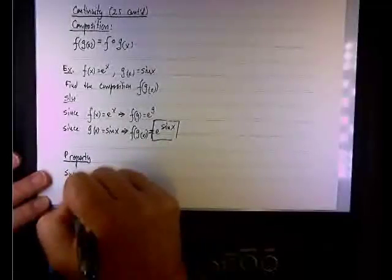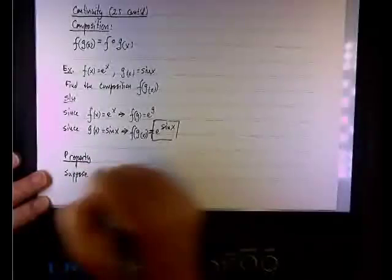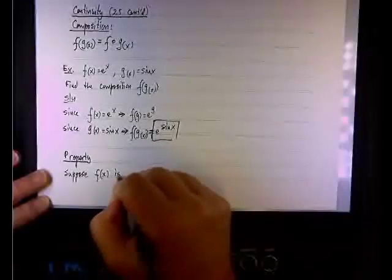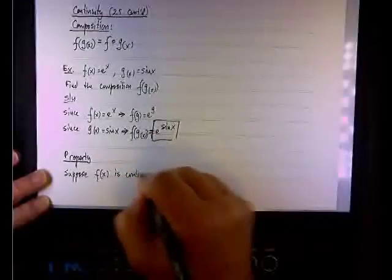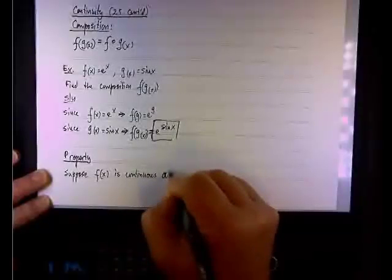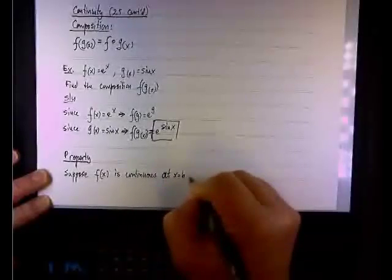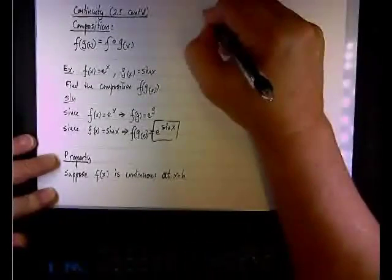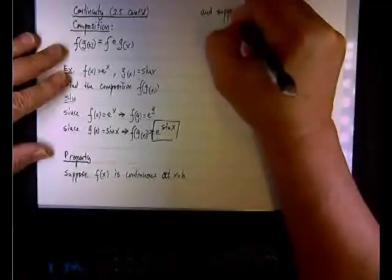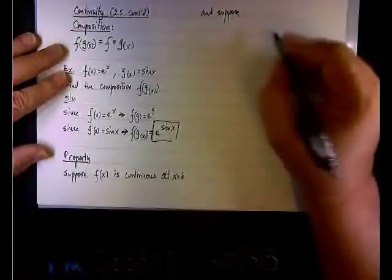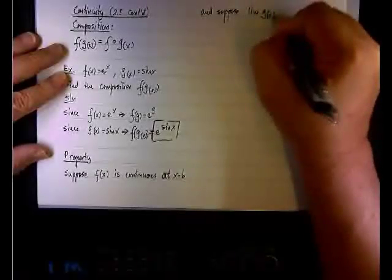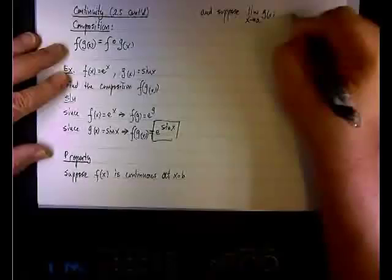So suppose f(x) is continuous at the point x equals b, and suppose that the limit of g(x) when x approaches a is b.